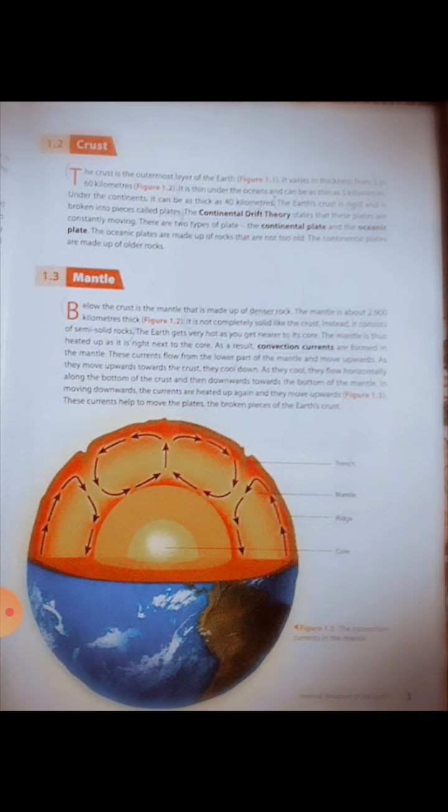Now we start reading. The crust is the outermost layer of the earth. It varies in thickness from 5 to 60 kilometers. It is thin under the oceans and can be as thin as 5 kilometers. Under the continents, it can be as thick as 40 kilometers.